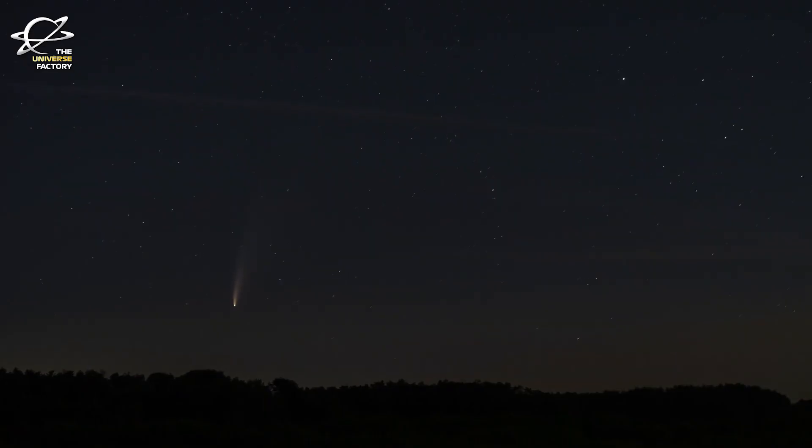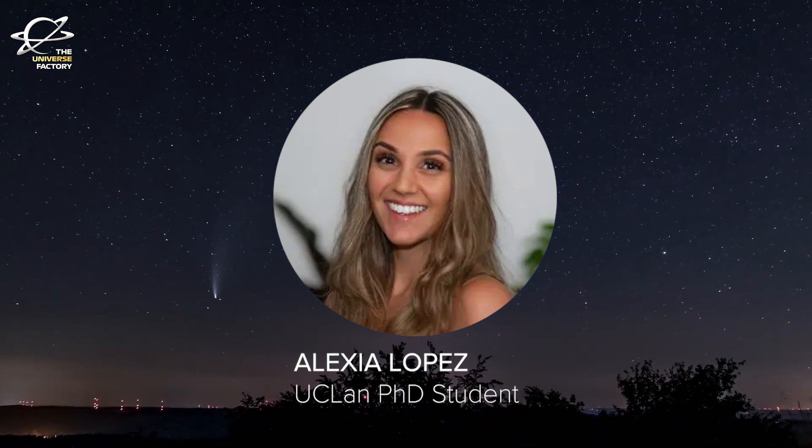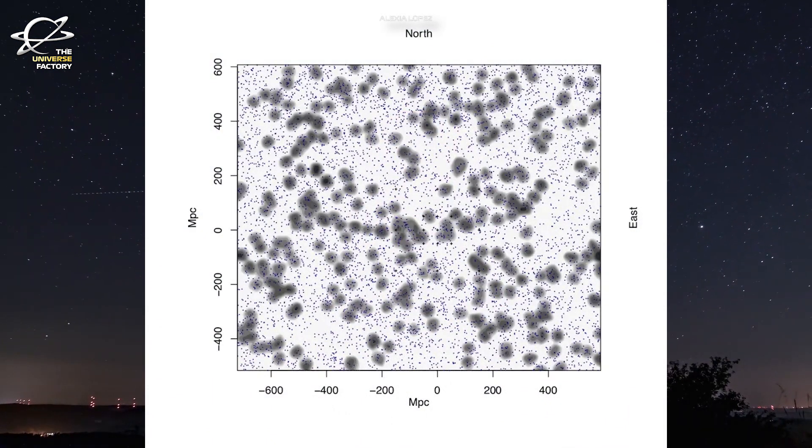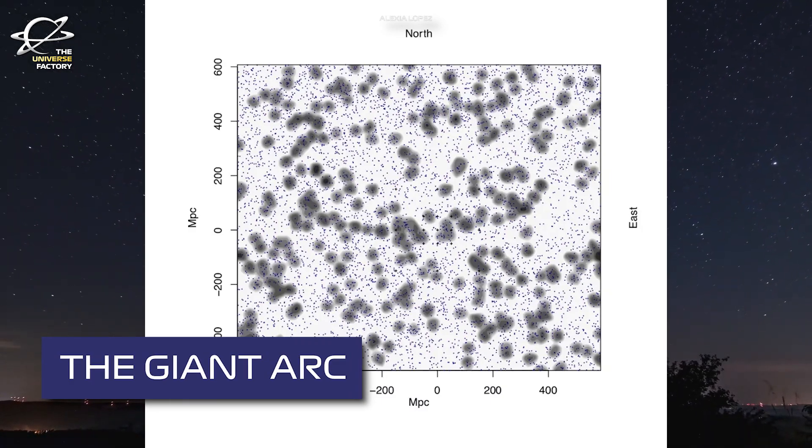Curiously enough, this is the second such structure that was discovered by Alexia Lopez, who is a PhD student at the University of Central Lancashire. The previous structure is called the Giant Arc and it is even more massive with a diameter of 3.3 billion light years.